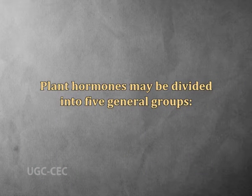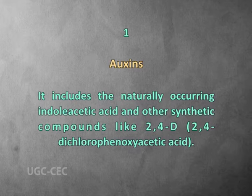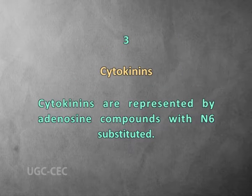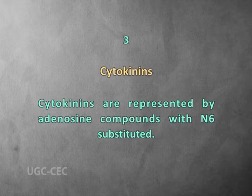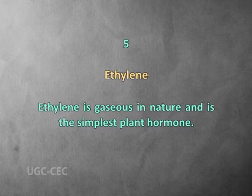Plant hormones may be divided into five general groups. The first group is the auxins, which includes the naturally occurring indole acetic acid and other synthetic compounds like 2,4-D or 2,4-dichlorophenoxyacetic acid. The second group are the gibberellins, including steroid-like compounds comprising over 40 different structures. The third group are the cytokinins, represented by adenosine compounds with N6 substituted. The fourth group is abscisic acid, represented by a single substance, abscisic acid, which is also derived from isoprenoid units like the gibberellins. And the fifth group is ethylene, which is gaseous in nature and is the simplest plant hormone.